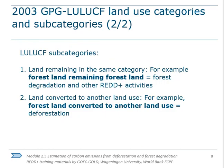The original GPG LULUCF guidelines delineate two subcategories that are relevant to REDD: land remaining in the same land use category, and land converted to another land use. In the context of REDD, that is forest land remaining forest land — which is where degradation occurs — and forest land converted to another land use, which is deforestation.